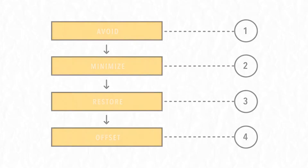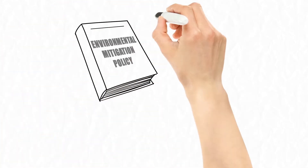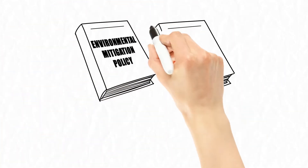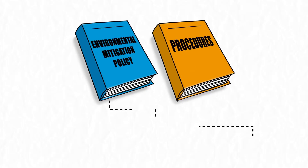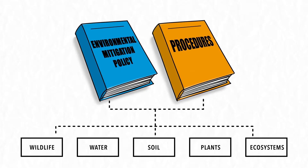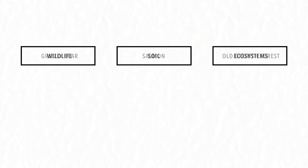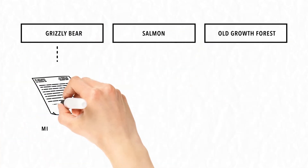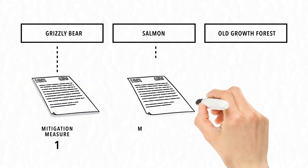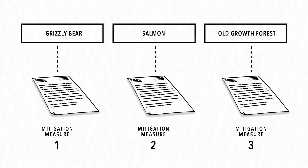Together, the policy and accompanying procedures lay out what information should be considered when determining which values are affected by the project, and they underscore the linkage between the type of impact occurring and an appropriate mitigation measure.